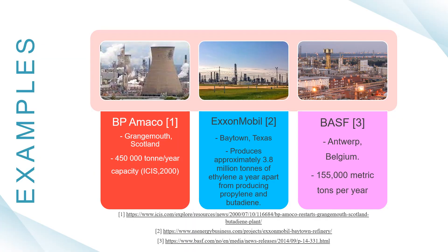Here are some examples of butadiene plants around the world. First, BP Marco, located at Grangemouth, Scotland, with a capacity of 150,000 tons per year. Next, ExxonMobil, located at Baytown, Texas, which produces approximately 3.8 million tons of ethylene a year, with butadiene treated as a byproduct. Lastly, Basell, which has its butadiene plant at Antwerp, Belgium, with a capacity of 155,000 metric tons per year. That's all from us, thank you.